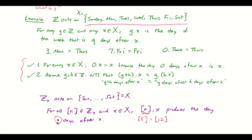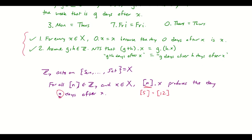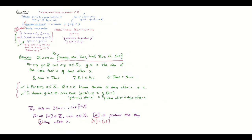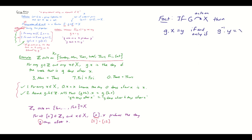Before wrapping up, I want to mention one important property of group actions. Fact: if G acts on X, then g·x = y if and only if g⁻¹·y = x. I claim this follows from the rules in our definition of group action. Let's prove it.